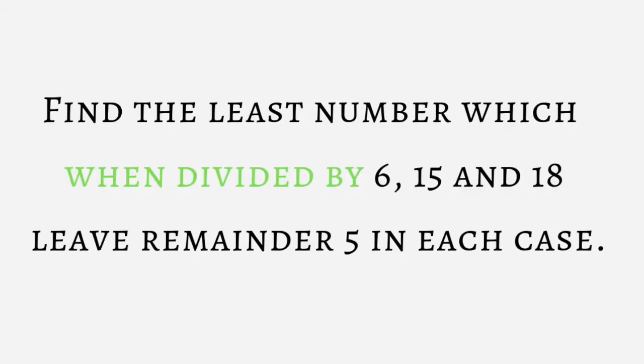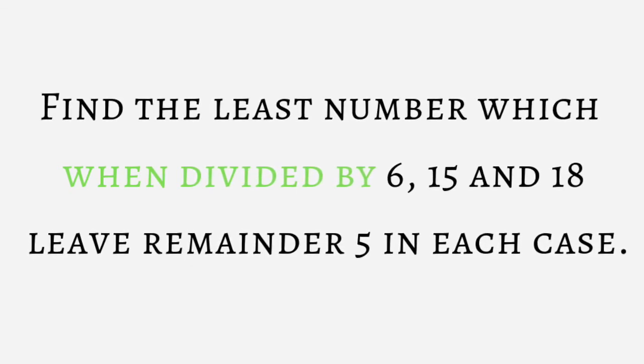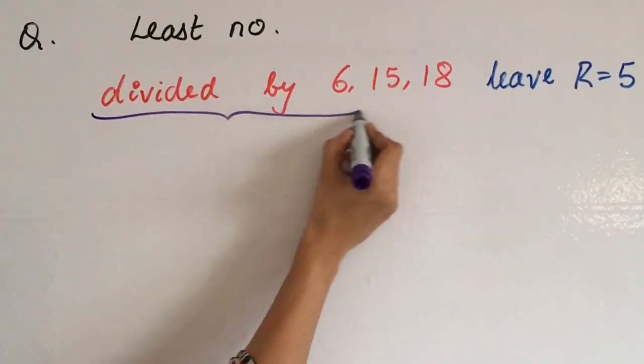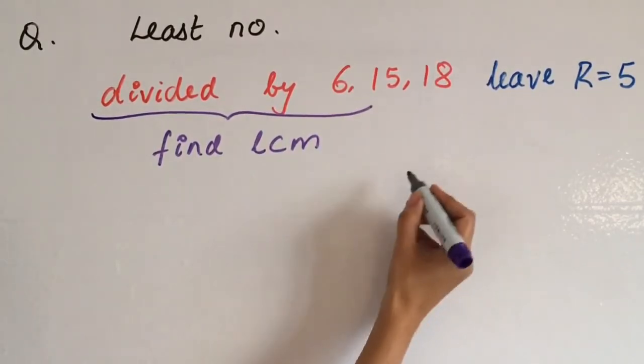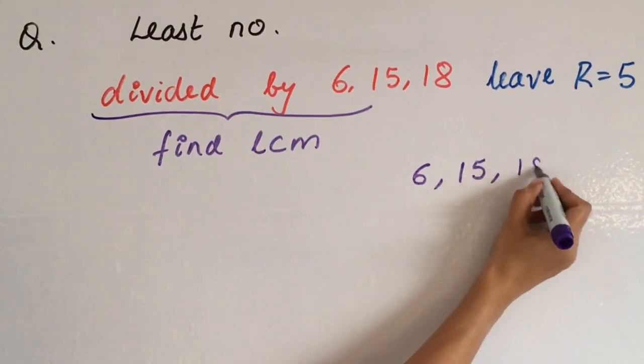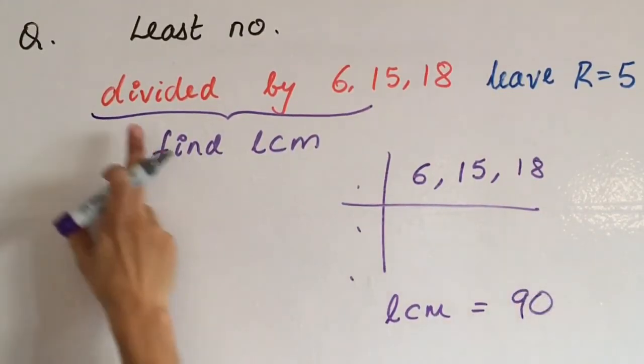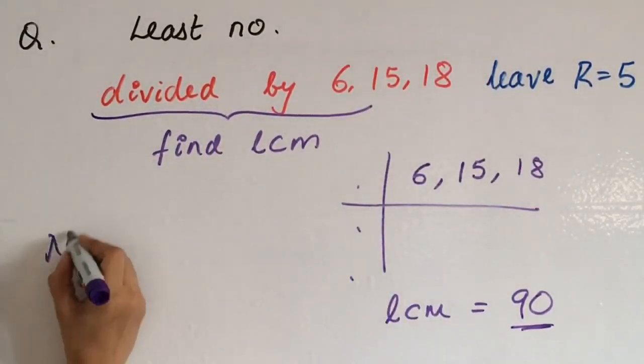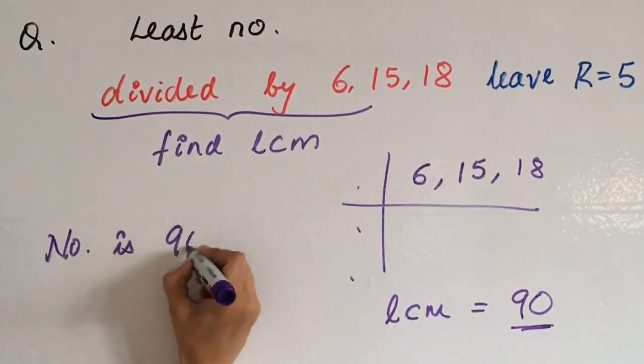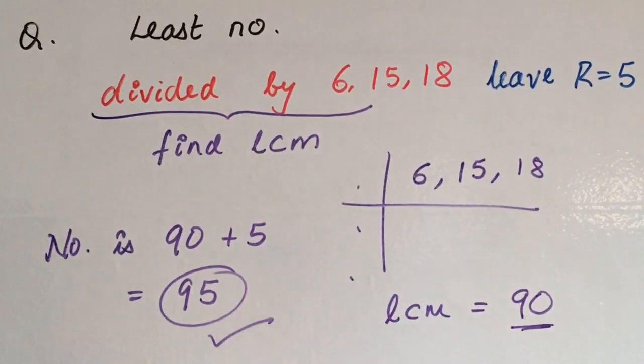The last question is, find the least number which when divided by 6, 15 and 18 leaves remainder 5 in each case. According to the question, this number is divided by 6, 15 and 18. That means we have to find a common multiple. That is, we will find the LCM. You can find it by normal calculation. The value that will come out is 90. Now as per the question, when the number is divided by these three numbers, the remainder should be 5. So if we add 5 to 90, we get 95. Now we can check it. When we divide 95 by 6, 15 or 18, in each case the remainder will be 5. Therefore your answer is 95.